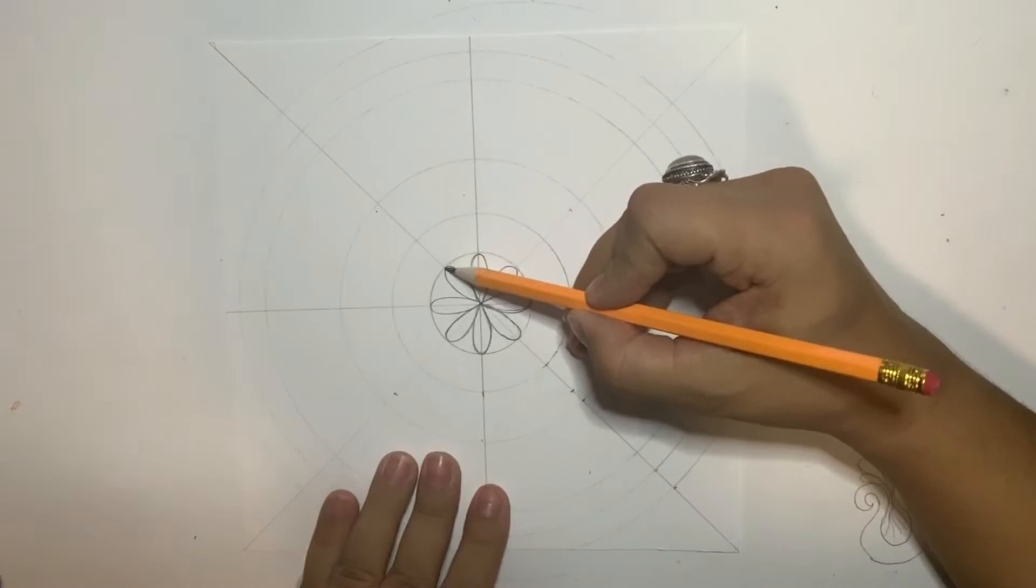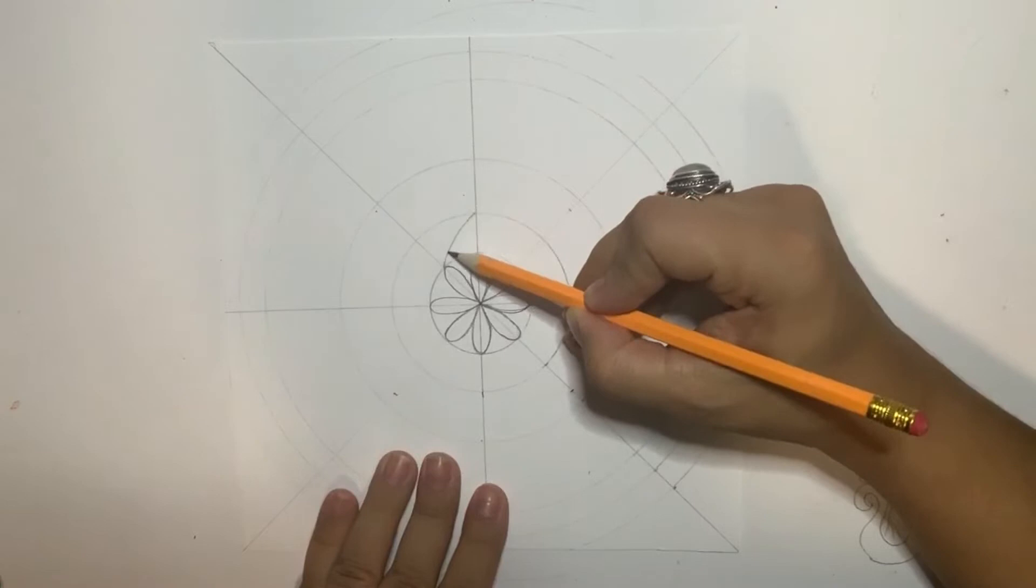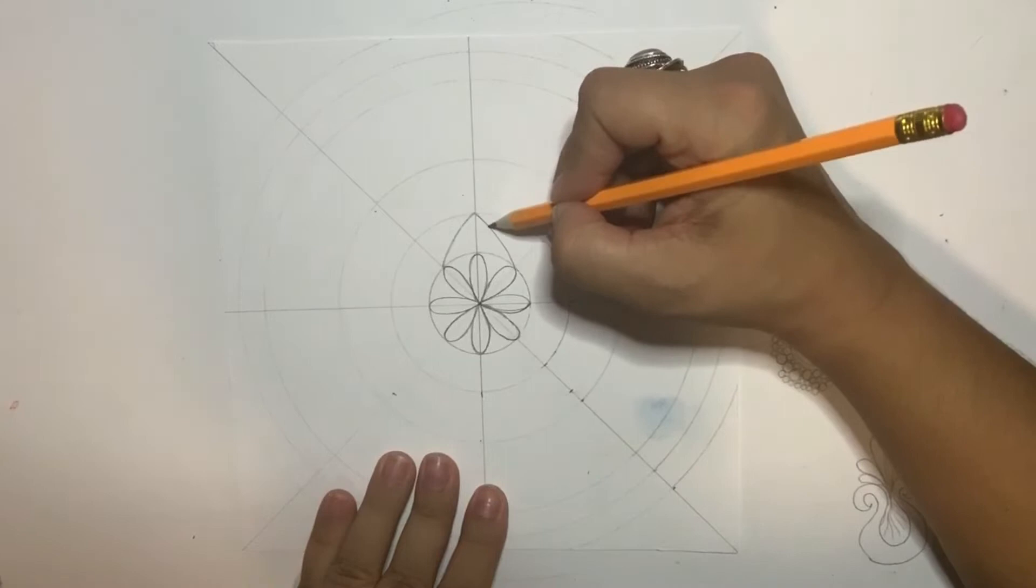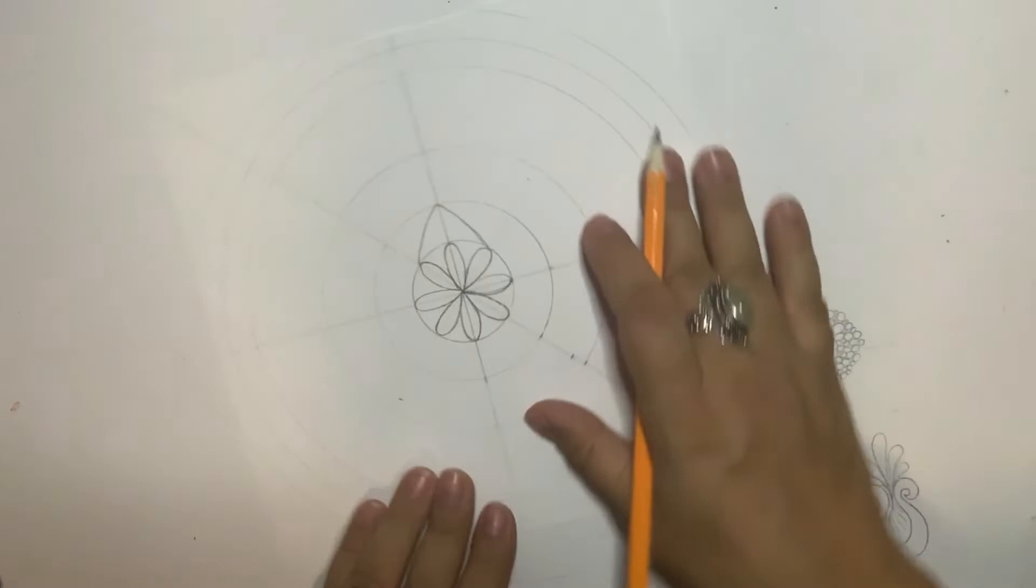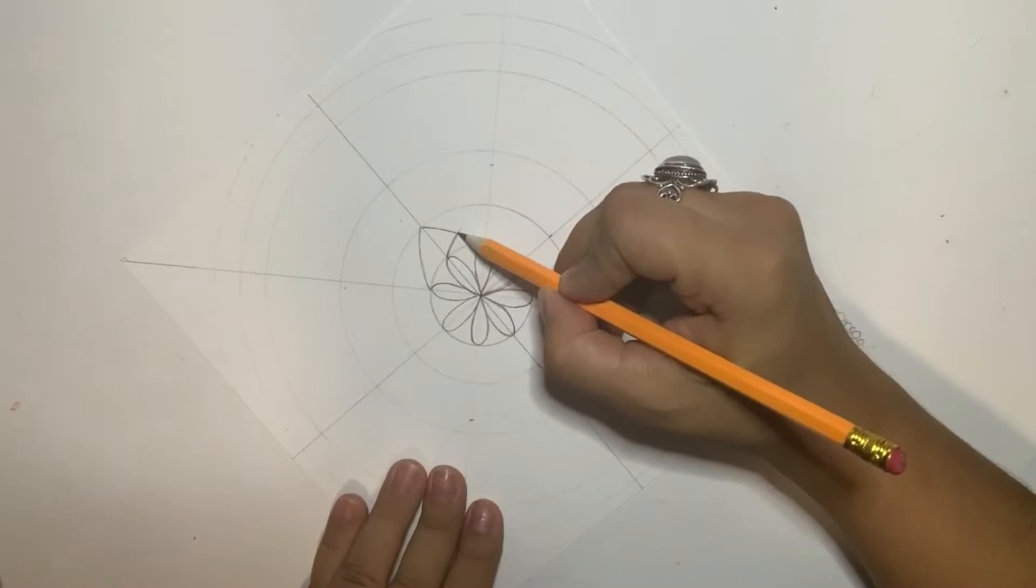So now I pretend to make a different kind of petal. From the top part of this petal, I will go with a curvy line to the top of this circle. I skip one petal and connect to the next petal.